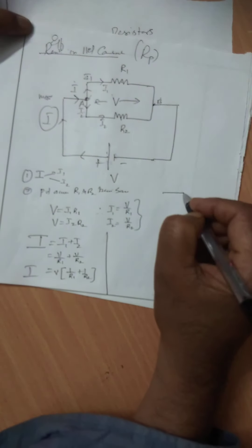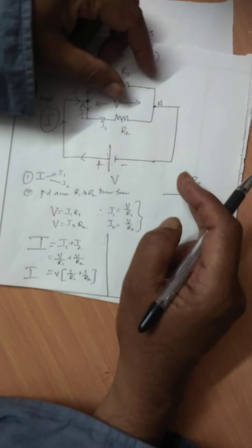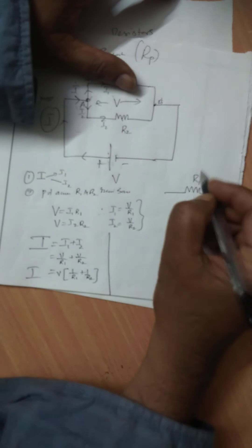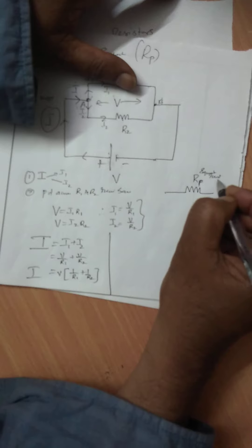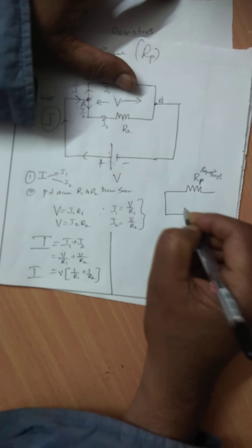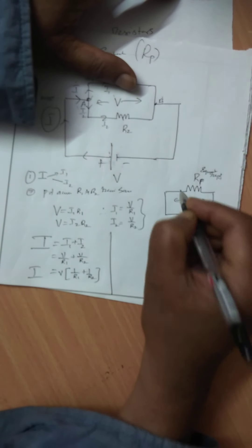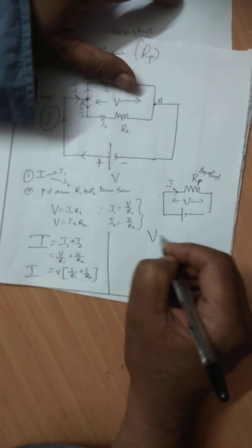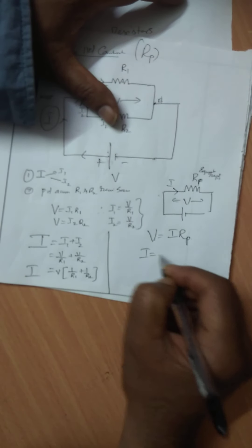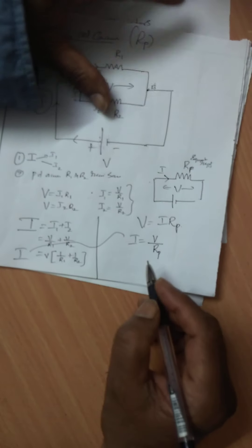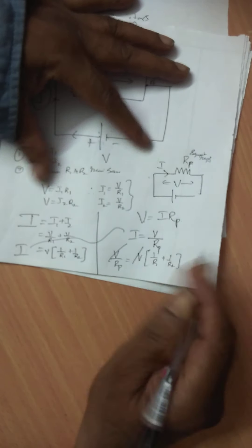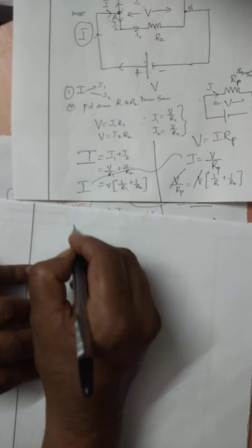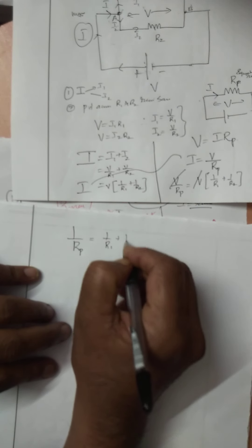Suppose we replace the parallel combination by a single equivalent resistance RP. Then V equals I·RP, so I equals V/RP. Substituting, V/RP equals V times (1/R1 plus 1/R2), and V cancels. Therefore, 1/RP equals 1/R1 plus 1/R2.